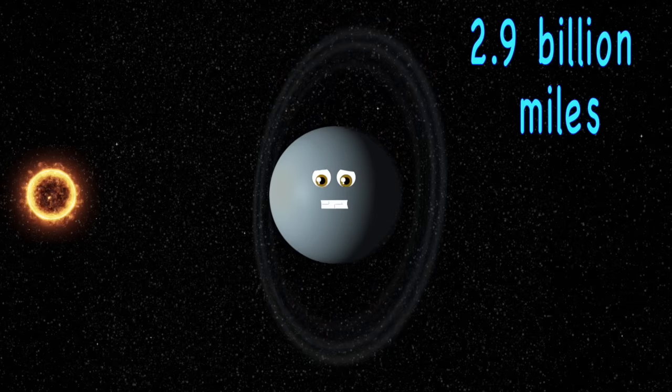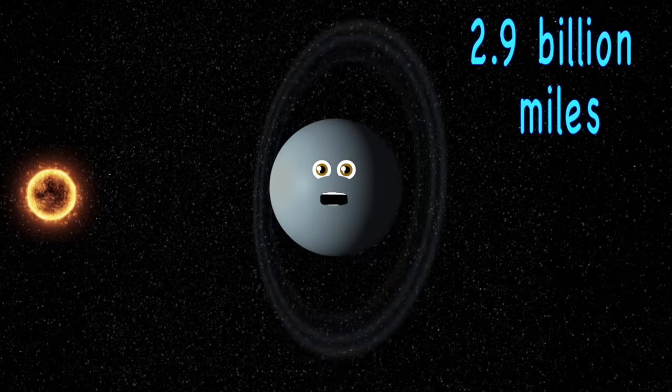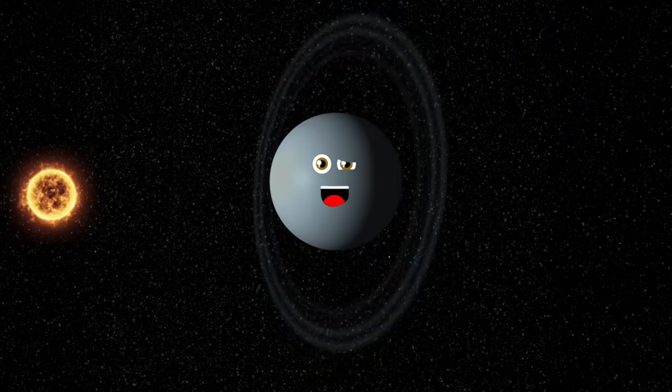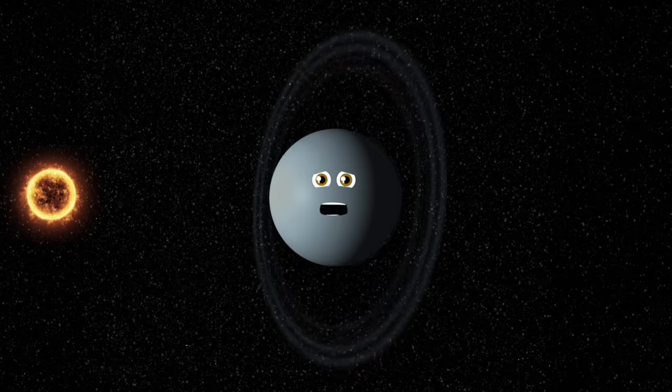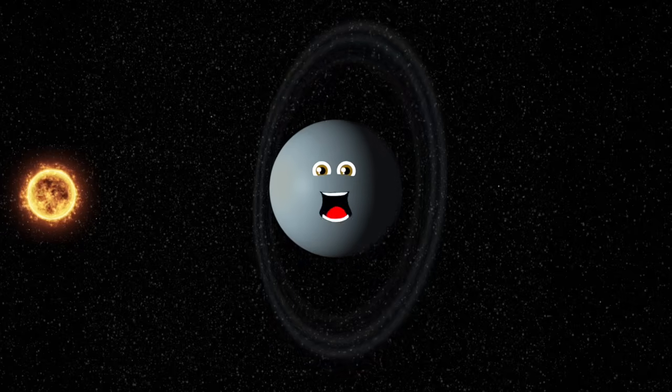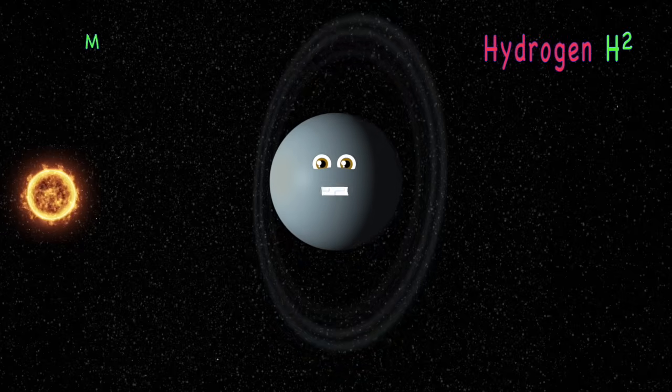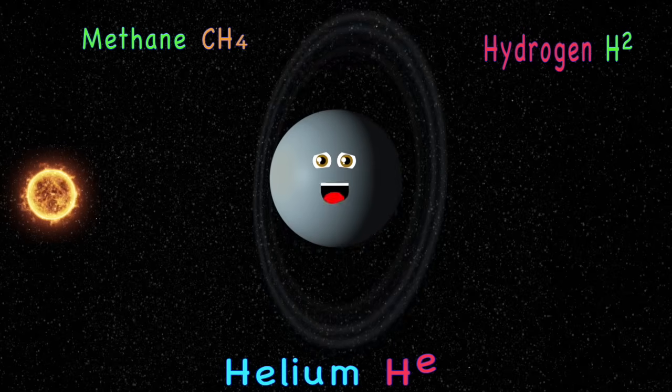2.9 billion miles is my distance from our sun, and I am an icy giant. It's so cold on me. My atmosphere is mostly made up of the following three: hydrogen, methane, and helium.